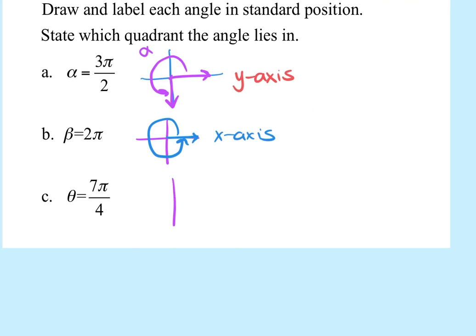The last one is 7π/4. As a mixed number, 7/4 is 1 and 3/4. Starting at 0: the top is a half, the left is 1, the bottom is 1 and a half, and back to the beginning is 2. So 1 and 3/4 lies in the fourth quadrant — halfway between 1.5 and 2. You can use Roman numerals or just write 'Quadrant 4.'